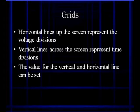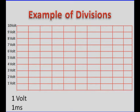The horizontal lines going up the screen represent the voltage divisions. The vertical lines going across the screen represent time divisions. And the values of all these can be set. Let's take a look at some examples.